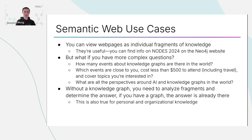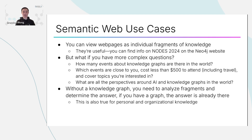And that's just one type of complex question — there are a lot more interesting use cases. For example, what if you want to find events about knowledge graphs that are close to you, cost less than $500 to attend including the cost of travel to and from the event, and cover topics that you are personally interested in? That's one of the really powerful use cases of something like the semantic web.